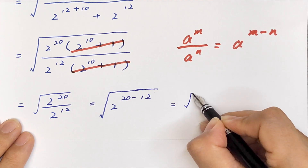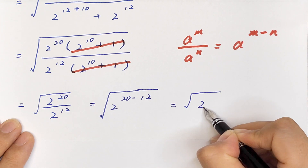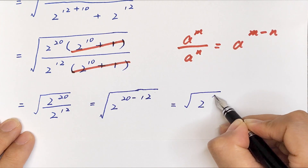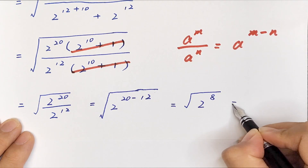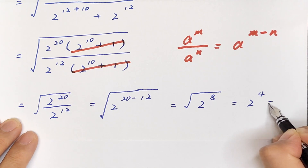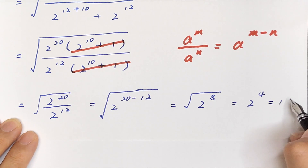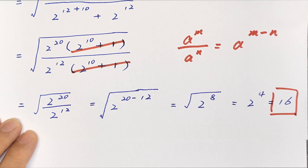This equals the square root of 2 to the power of 20 minus 12, which is the square root of 2 to the power of 8, equals 2 to the power of 4, equals 16. The final answer is 16. Thank you for watching and see you in the next video, bye!